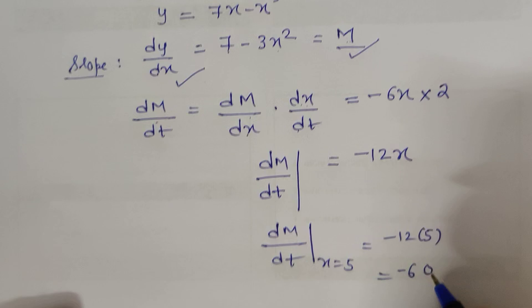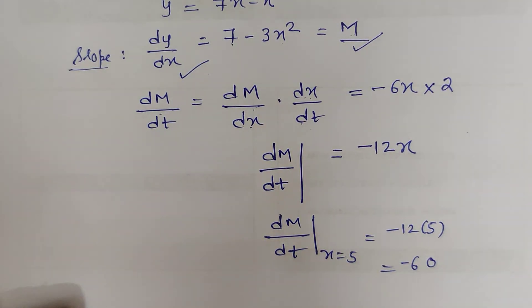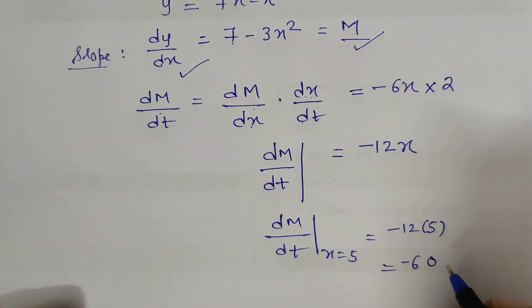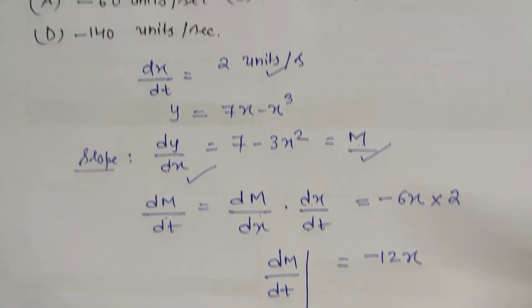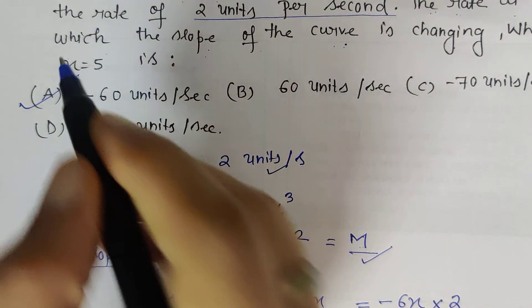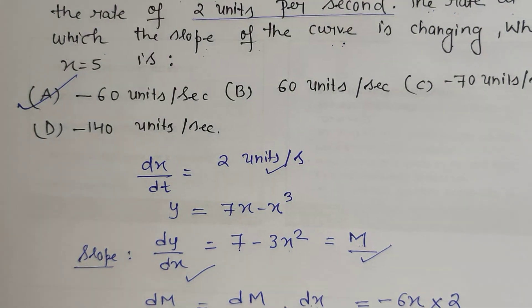Which is -60 units per second. So out of the four options, option A is correct: -60 units per second. Thank you.